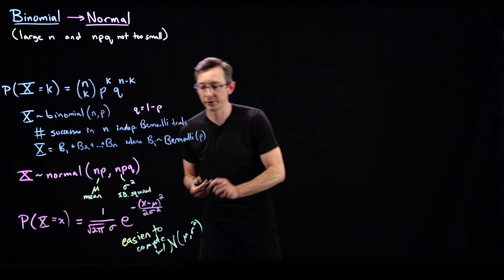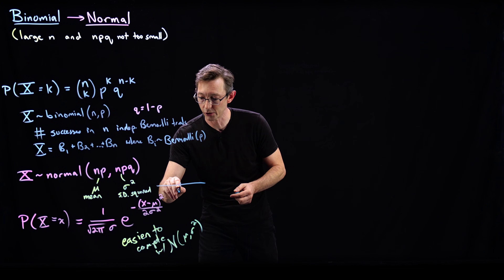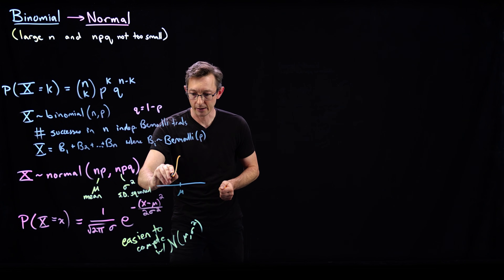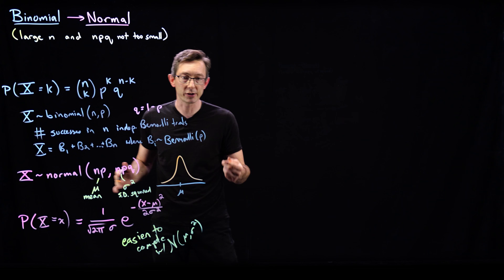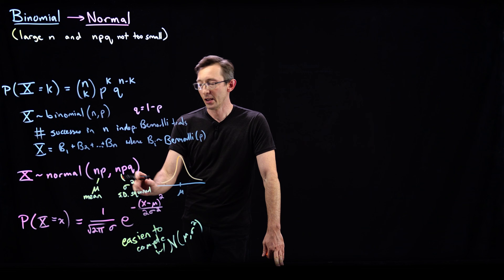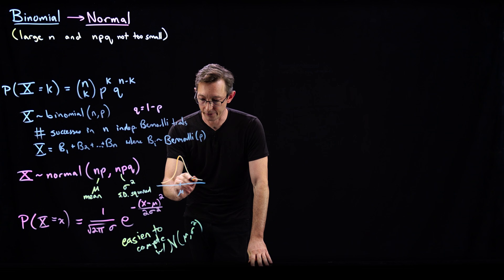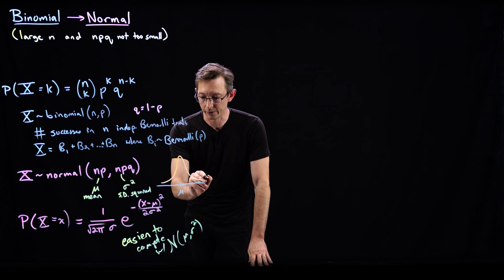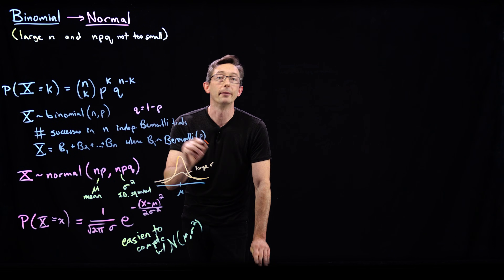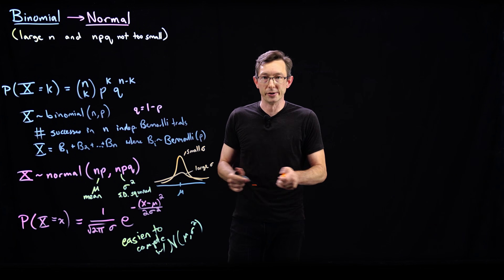The normal distribution is the standard kind of Gaussian that we're used to seeing. This is going to converge to a Gaussian with mean mu. This standard deviation sigma is essentially going to measure the spread of this Gaussian. If I have a large sigma, I'm going to have a more spread-out PDF, and a small sigma gives a narrow distribution.